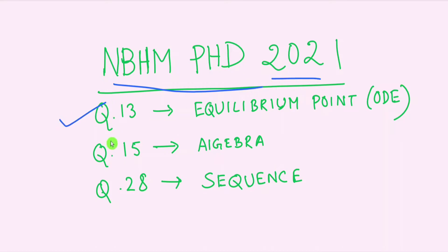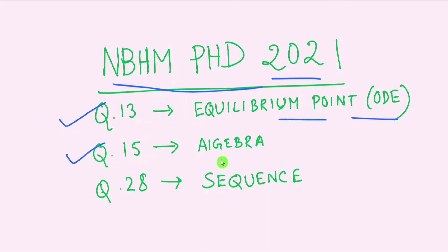Three questions: question number 13, which is from ODE — the question is to find the equilibrium point; question number 15, which is from algebra; and question number 28, which is from sequences.